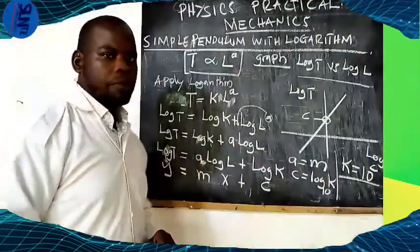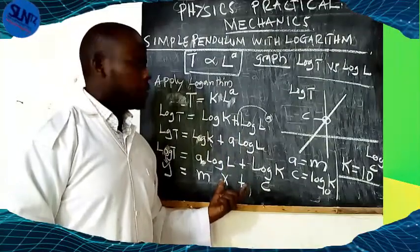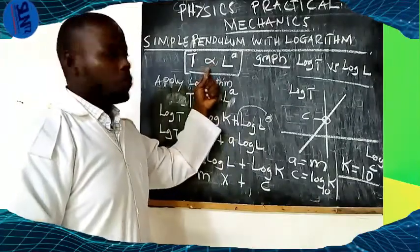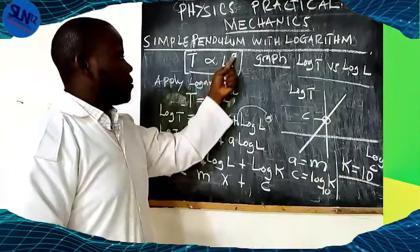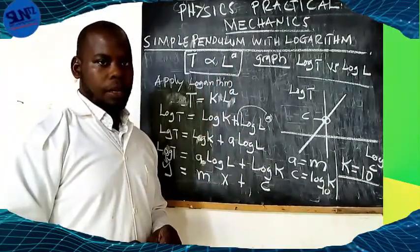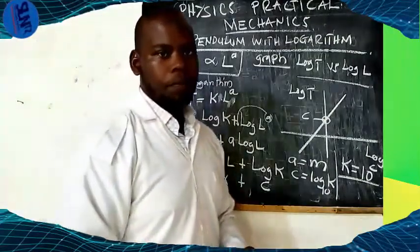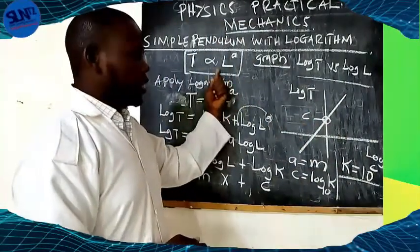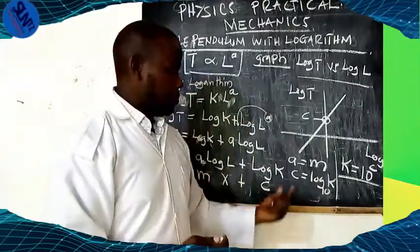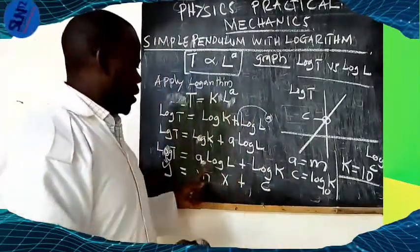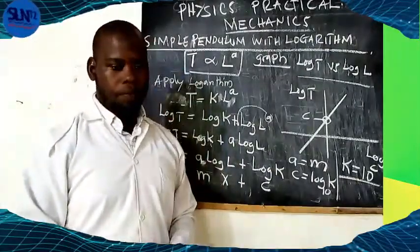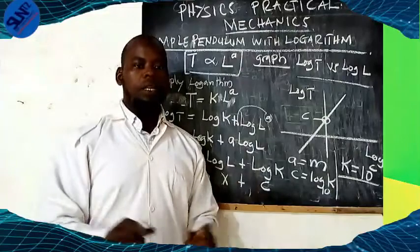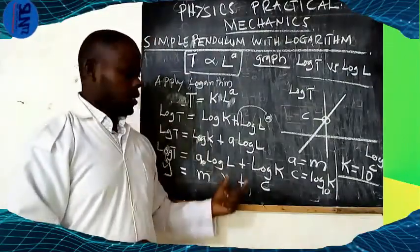In order to find the value of K, we apply the inverse of log base 10, so K equals 10 raised to the power of the y-intercept. Therefore, the value of A equals the slope, and the value of K equals 10 to the power of the y-intercept. That is our general equation for the simple pendulum in logarithms.